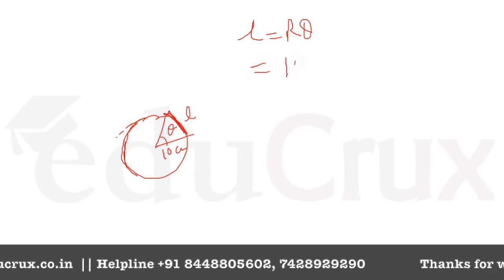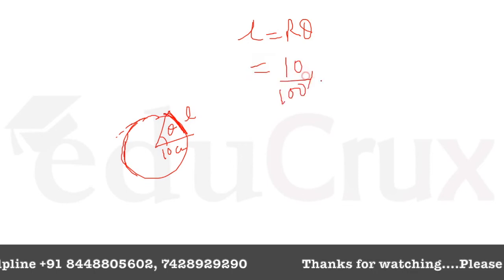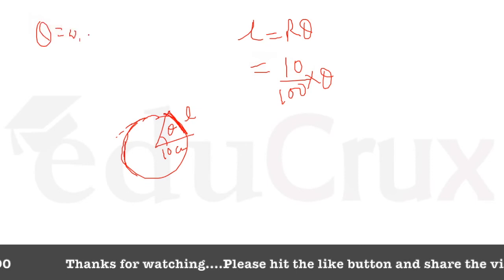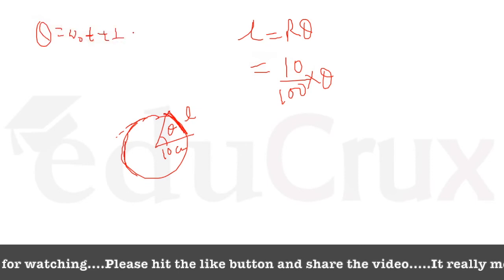What is R? R is 10 divided by 100 into theta. Now theta, you can calculate as omega naught t plus half alpha t squared.